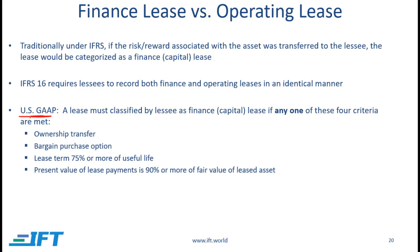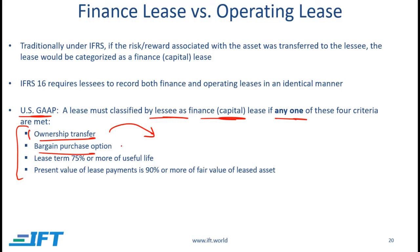Under US GAAP, the accounting treatment has not changed much. As before, a lease must be classified by a lessee as a finance lease or capital lease if any one of four criteria are met. Criteria 1 is ownership transfer — at the end of the lease, the ownership of the asset is formally transferred to the lessee, or there is a bargain purchase option whereby the lessee can buy the asset at a very low price, or if the lease term is 75% or more of the useful life, or the present value of lease payments is 90% or more of the fair value of the leased asset.